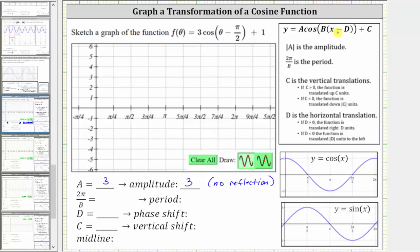Notice here we have cosine of b times the quantity (x - d), where x is the variable. In our function, we have cosine of (θ - π/2), where θ is the variable. Therefore, b = 1.